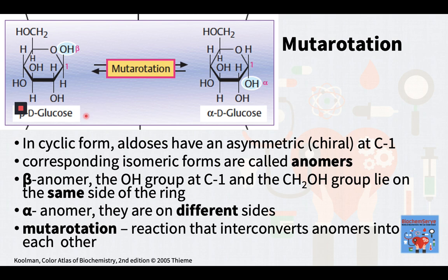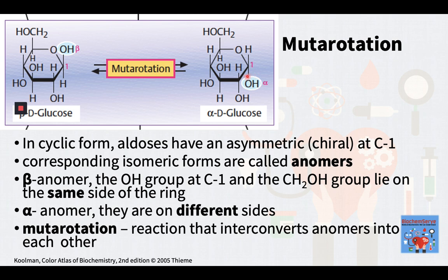The corresponding isomeric forms are called anomers. In the beta-anomer, as shown on the left, the OH group at C1, or the anomeric OH group, and the CH2OH group lie on the same side of the ring. In the alpha-anomer, shown on the right, they are on different sides. The reaction that interconverts anomers into each other is known as mutarotation.